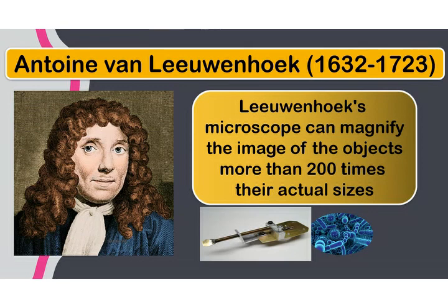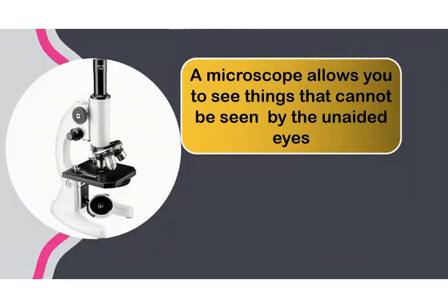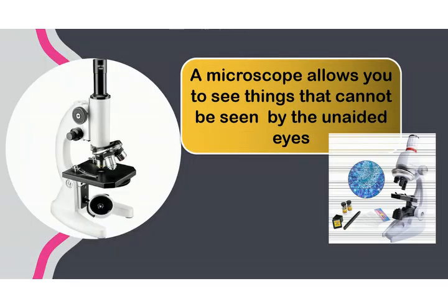Leeuwenhoek's version of the microscope enabled him to discover organisms such as bacteria and microscopic protists. The microscope allows you to see things that cannot be seen by the unaided eyes.